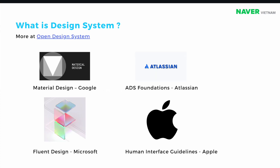Design systems are not something new. They've been around for a while, and big corporations are using them to facilitate their work and boost their branding. The most popular one for Android engineers is no doubt Material Design — used not only for Google products but widely across the Android community. Besides that, there are other design systems like Fluent Design from Microsoft, ADS Foundation from Atlassian, and Human Interface Guidelines from Apple.